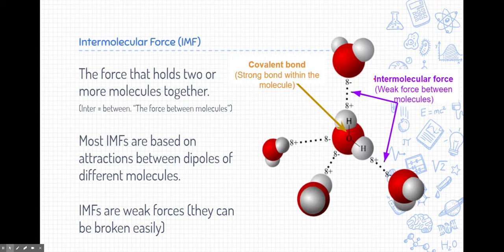Now intermolecular forces are fairly weak forces. We can break them with common tools that we just have around us. Covalent bonds and ionic bonds, on the other hand, are very strong forces. They're harder to break.